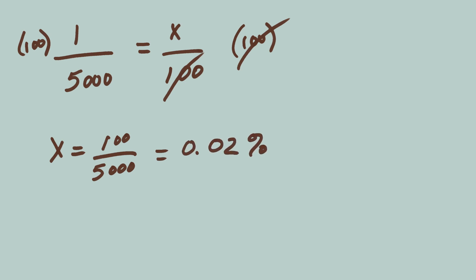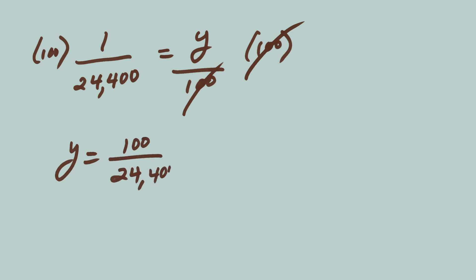Let's do the same thing for the unlucky clovers. Let's call that percentage y. 1 over 24,400 equals y over 100. To get y on its own, multiply both sides of the equation by 100. y equals 100 over 24,400 equals 0.004%.